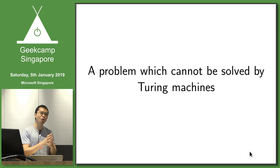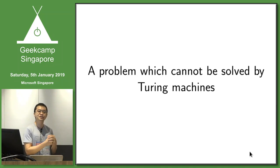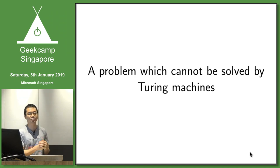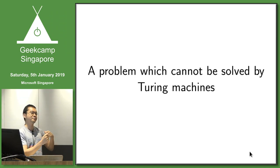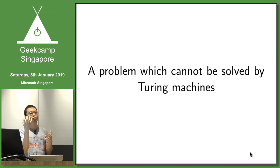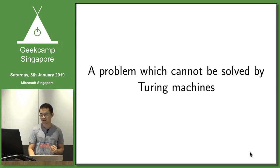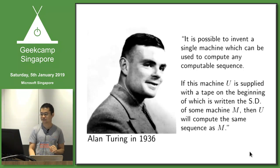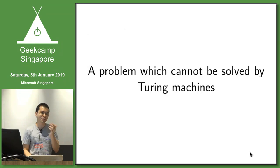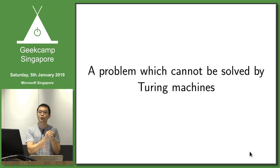Since machines are quite powerful and can do a lot of things, maybe this would be something machine B cannot do — it can never tell me if machine A would ever print the symbol 0. It's like twisting the power of the machine against itself by feeding one machine as input to another machine.